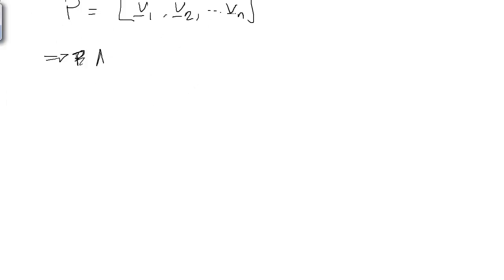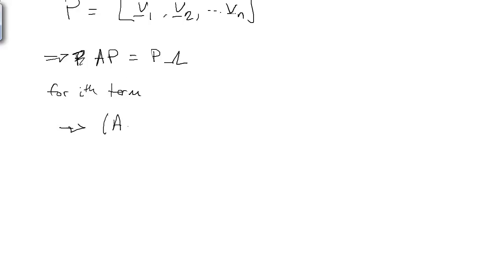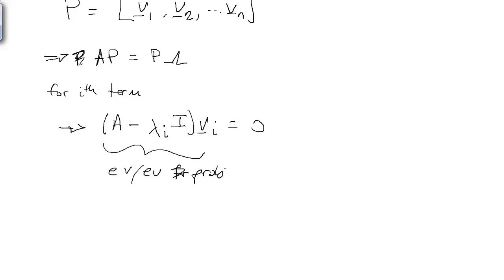We can write down A times P is equal to P times capital lambda. When we multiply out P with capital lambda, this is just the product of each column with each diagonal element — the scalar. What we end up with for the ith term is matrix A minus lambda sub i times an identity matrix times V sub i equals zero. This is the eigenvector eigenvalue problem we're used to solving.